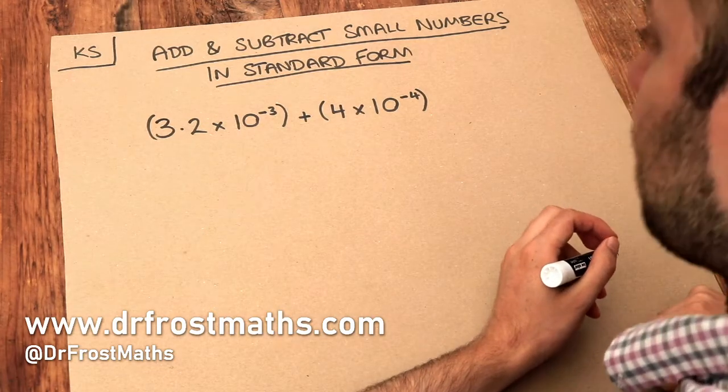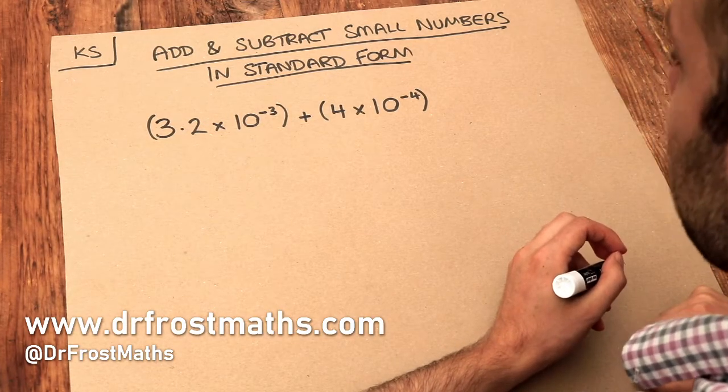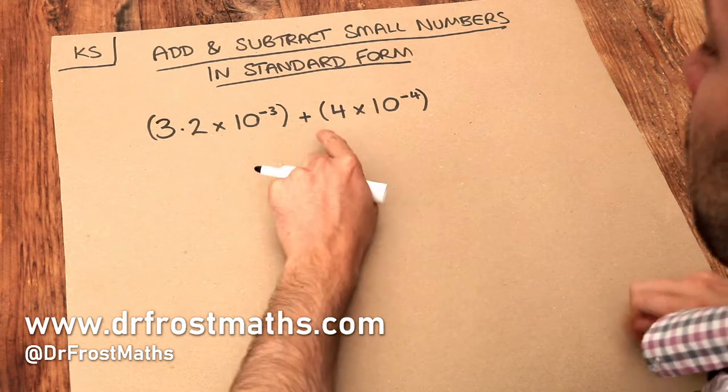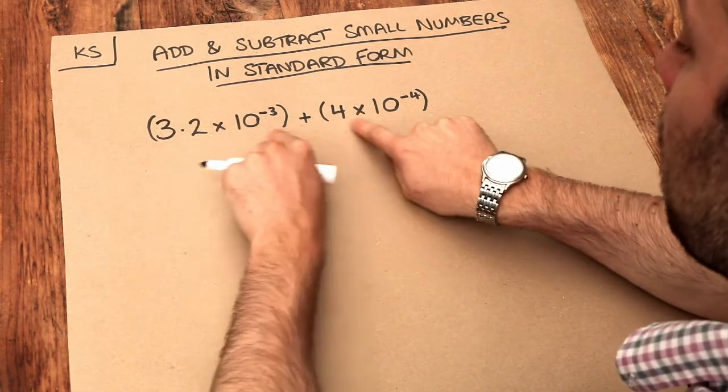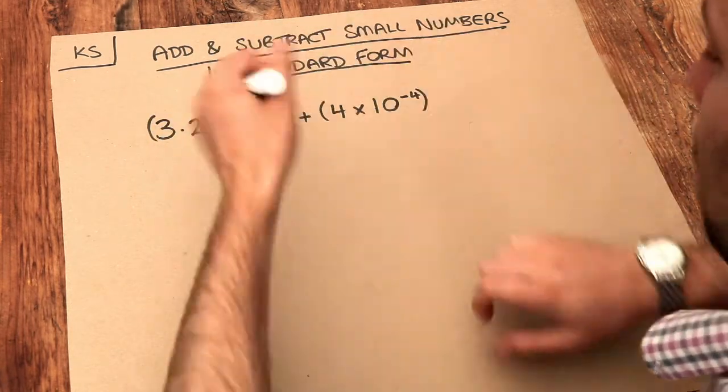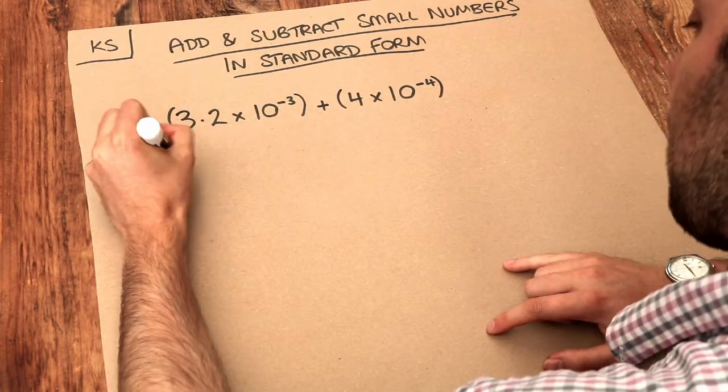Hello and welcome to this Dr. Ross Mass key skill video on adding and subtracting small numbers in standard form. Now we saw in the previous video one method was to just convert both of these standard form numbers to normal numbers, then add them together and then convert back to standard form. So let's do that as our method one.